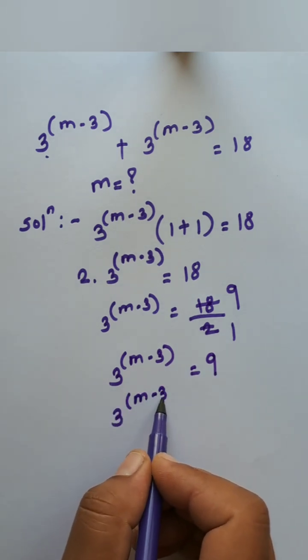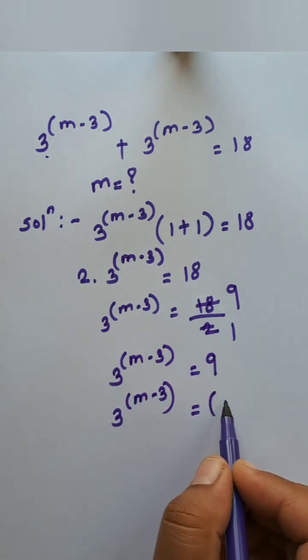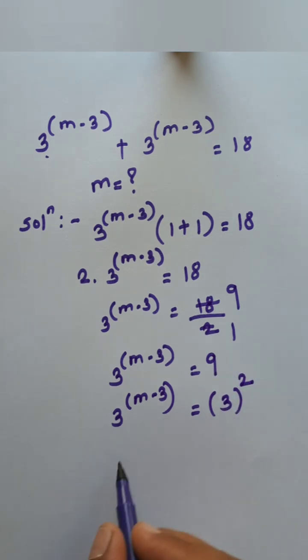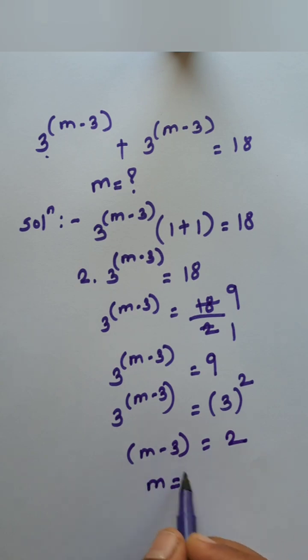9 is written as 3 squared. So write down 3 raised to m minus 3 equals 3 squared. The bases are common, so write down m minus 3 equals 2.